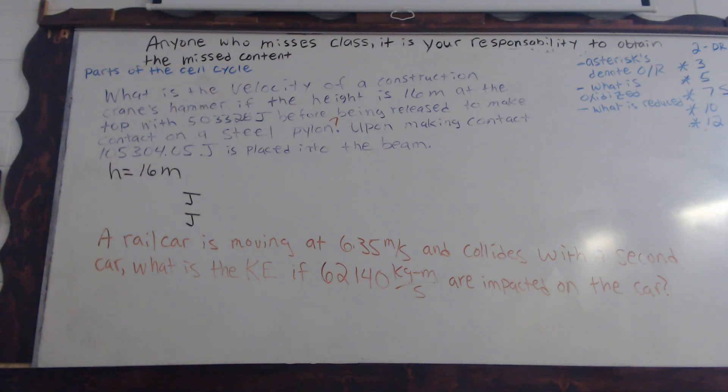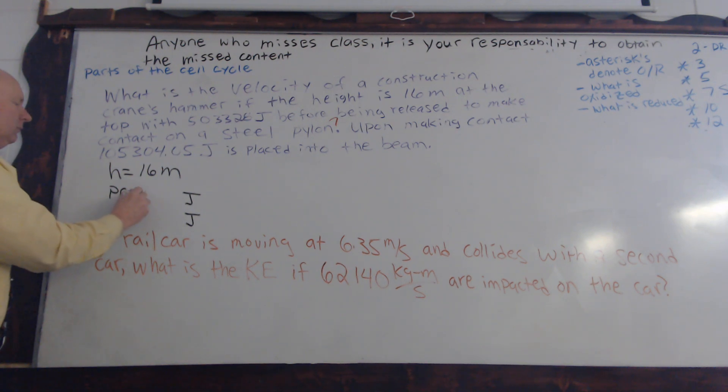So then, upon doing this, how can we tell the difference between these two energies? It says on the bottom, upon making contact, and with the first one, it says at the top. But what does that mean as far as, because you need to put the right energy into the correct formula or else it's just not going to work. The first one would be potential energy. Okay. And then the bottom one would be kinetic energy.